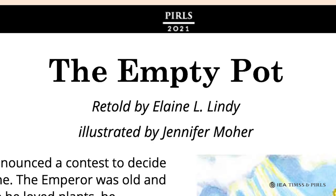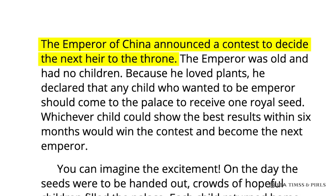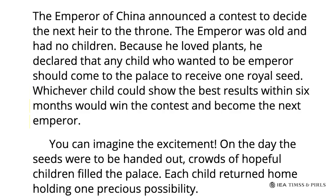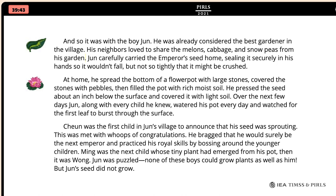In the Empty Pot story, the Emperor of China announces a contest to decide the next heir to the throne. Because he loved plants, he decided that the child who could grow the best plant within six months would become the next Emperor. Each of the many children who wanted to become Emperor was given a seed. The boy, Jun, carefully carried his seed home.